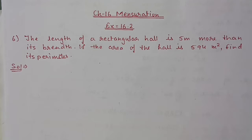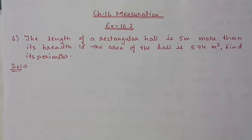Hello students, we are doing Chapter 16 Mensuration, Exercise 16.2. Till question number 5 we have already done in the previous video, and now we are starting from question number 6. The length of a rectangular hall is 5 meters more than its breadth. If the area of the hall is 594 square meters, find its perimeter.